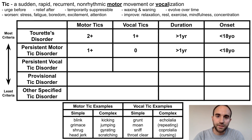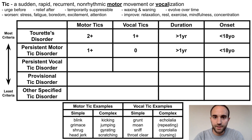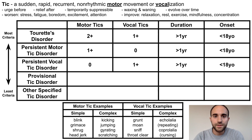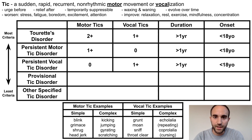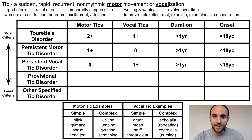Persistent motor tick disorder involves having at least one motor tick, but no vocal ticks. It has the same duration and onset as Tourette's disorder. Similarly, persistent vocal tick disorder involves having at least one vocal tick, but no motor ticks — again with the same duration and onset as Tourette's disorder.